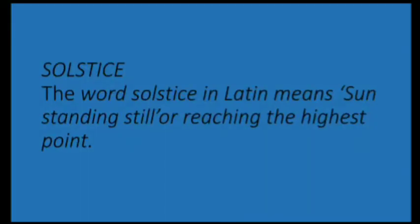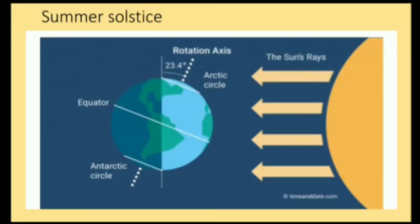The word 'solstice' means the Sun standing still, or reaching the highest point. During summer solstice, the North Pole is tilted towards the Sun while the South Pole is away from the Sun.